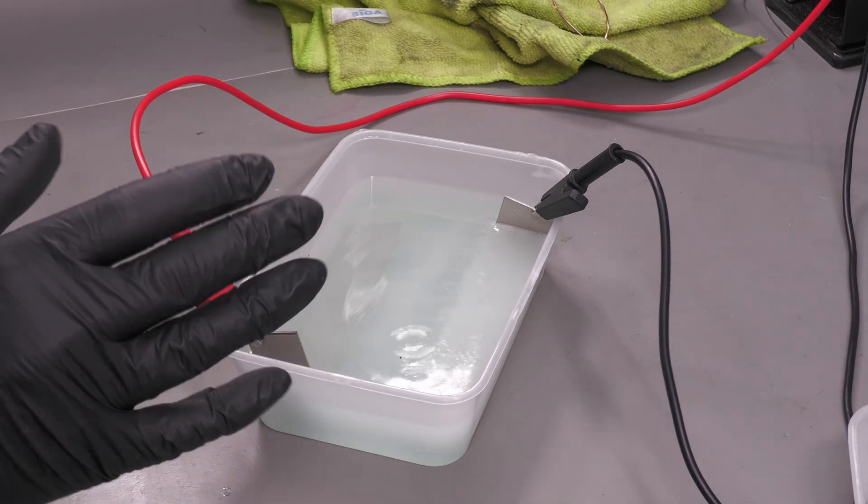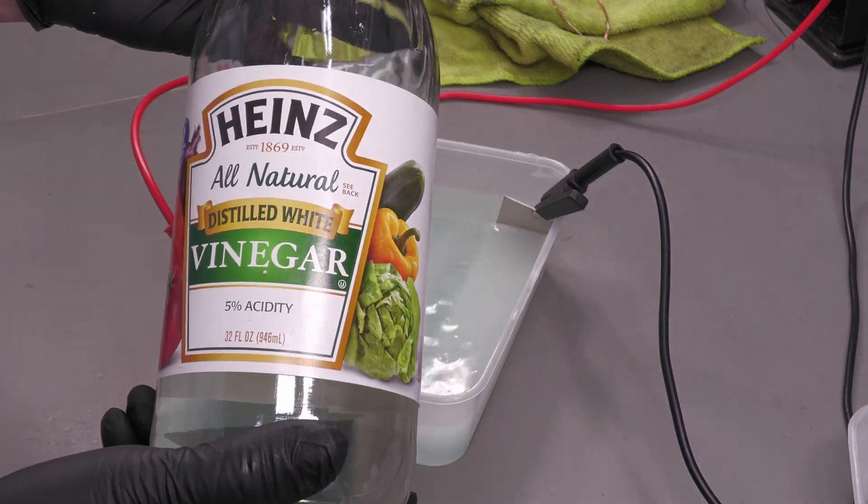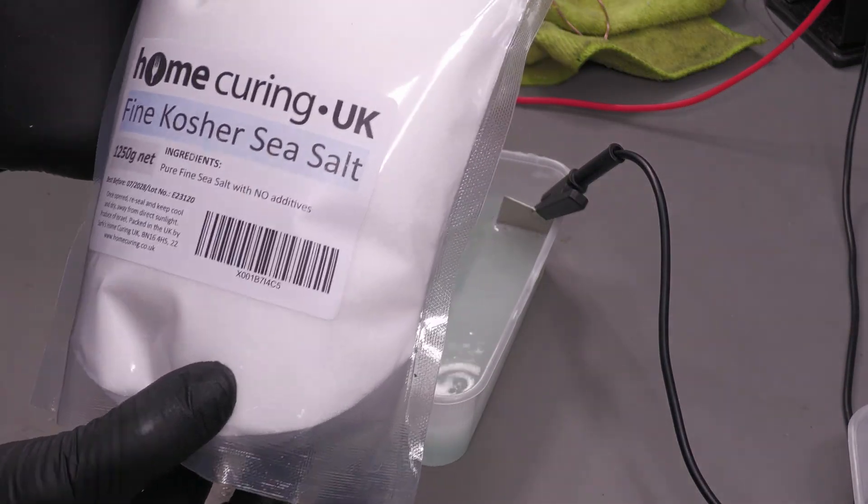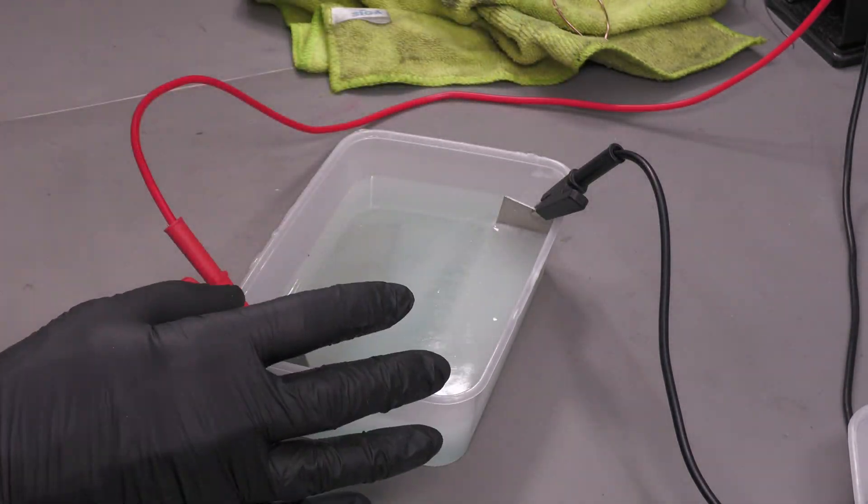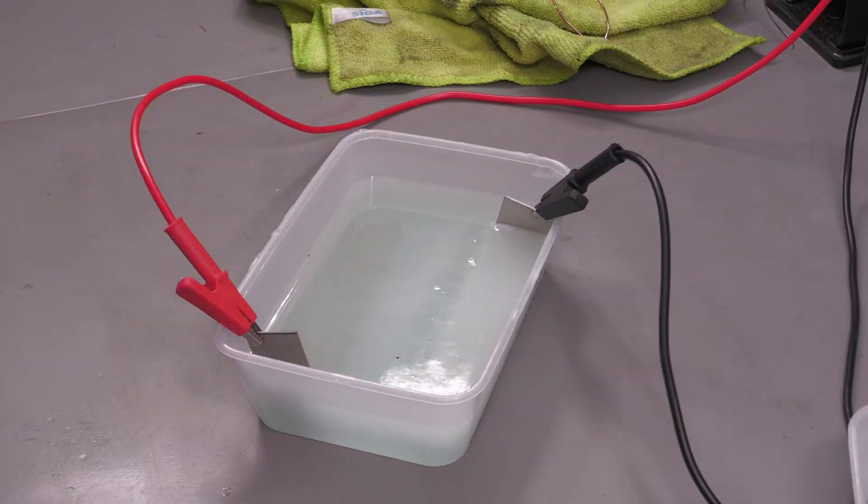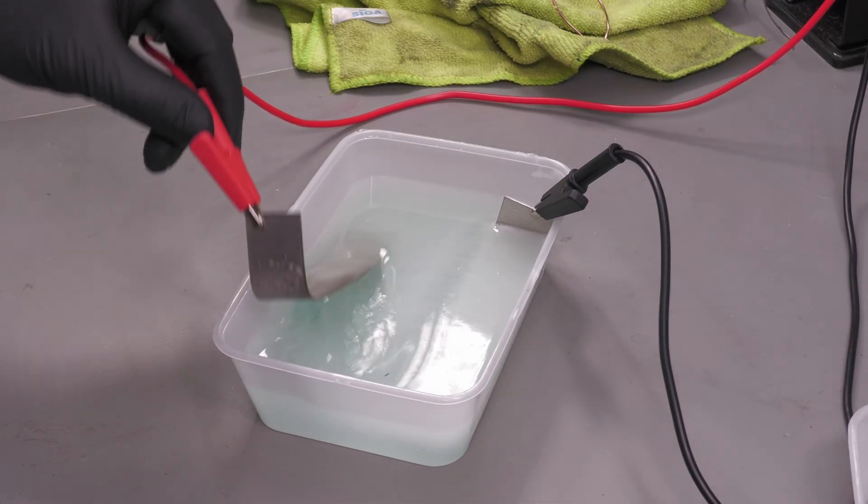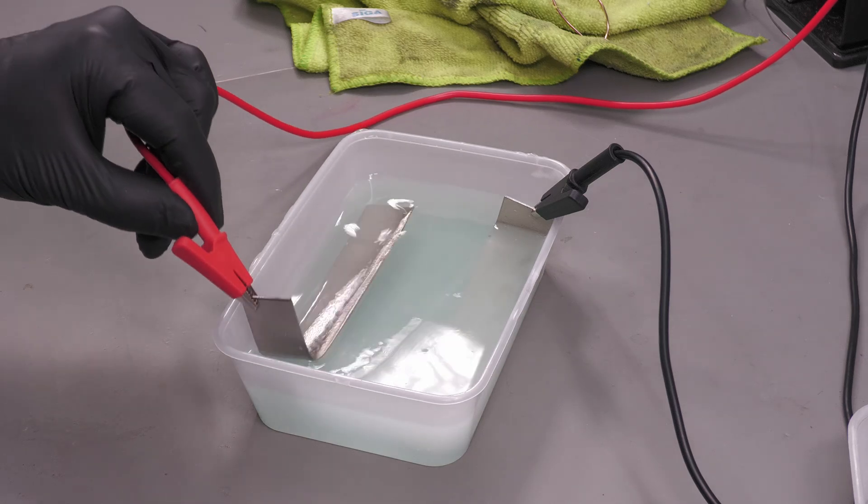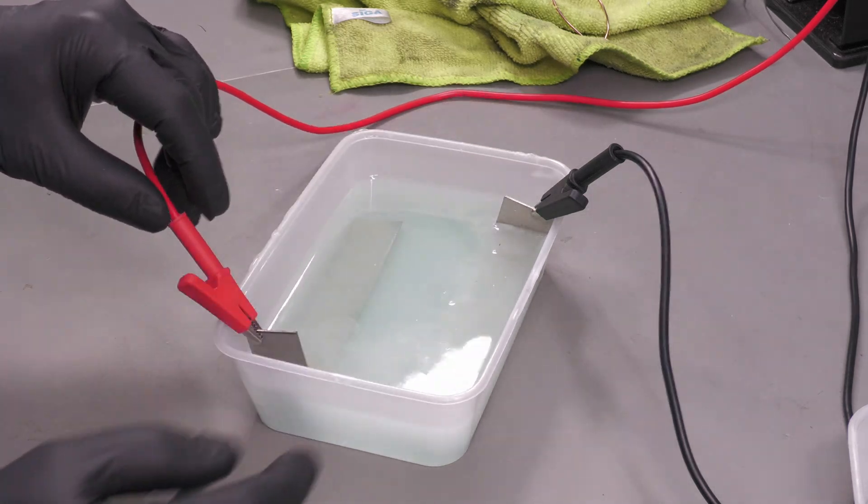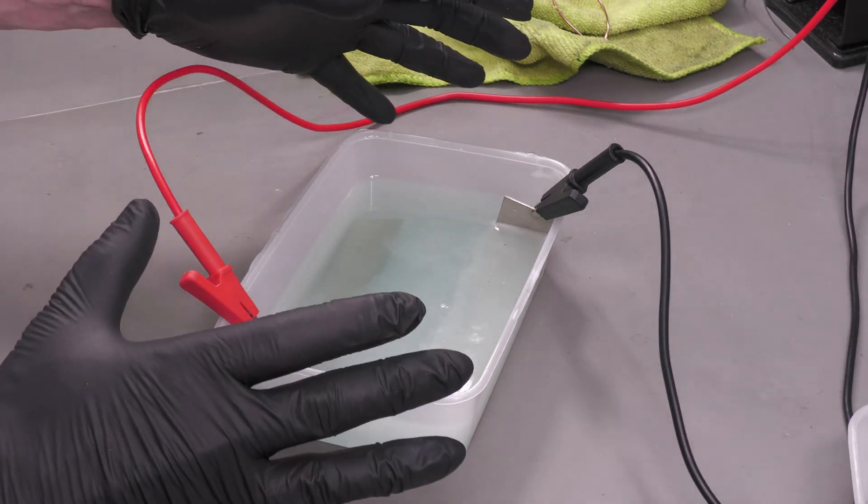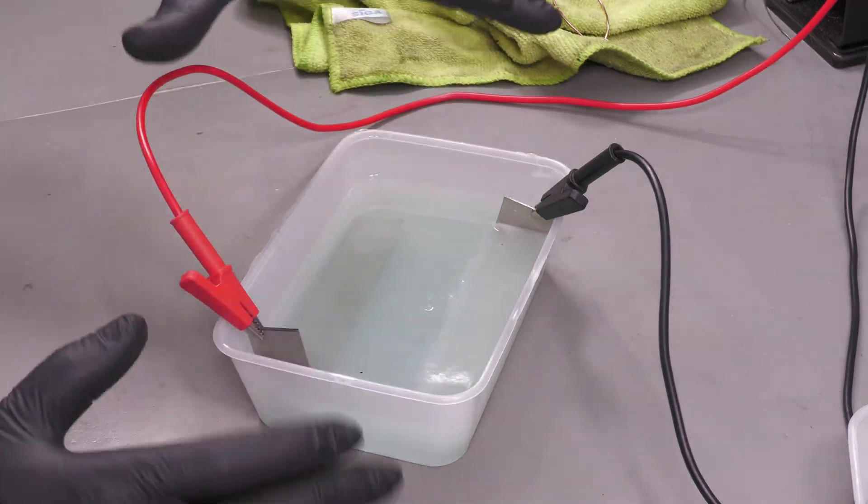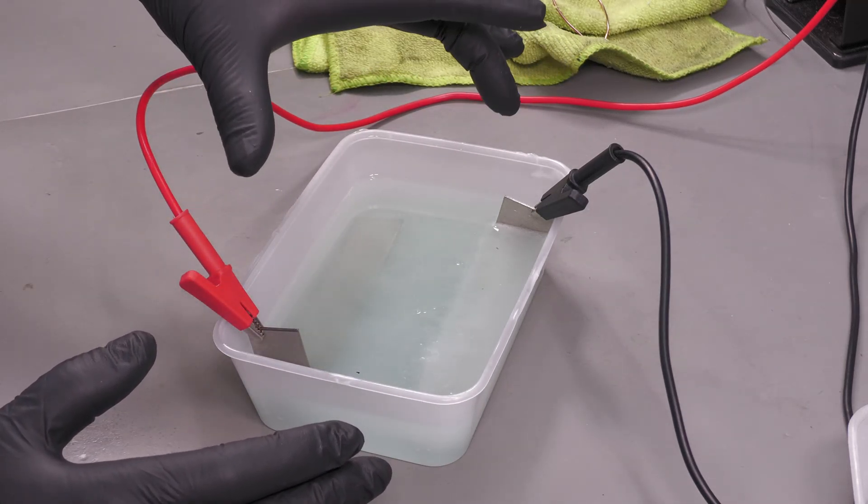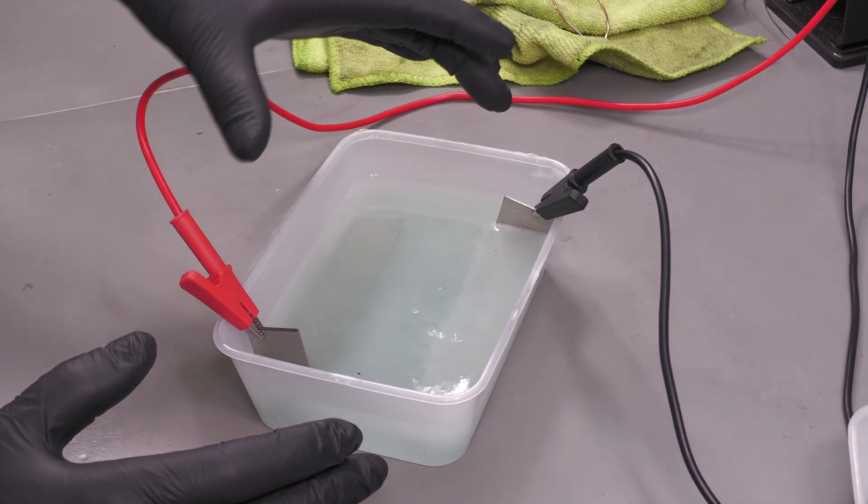What that consists of is some distilled vinegar, some kosher sea salt to make the solution conductive, and at the moment I've got two sacrificial nickel anodes that I've got on both the anode and the cathode at the moment, which I'm using to prepare the solution. What I've got is my power supply across the two anodes running at about two amps constant current.